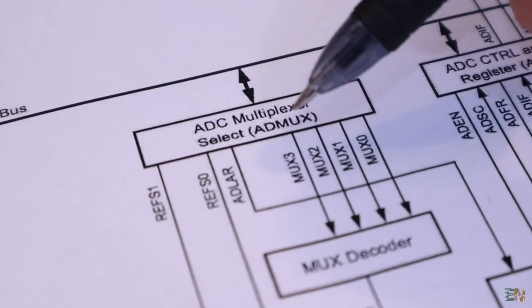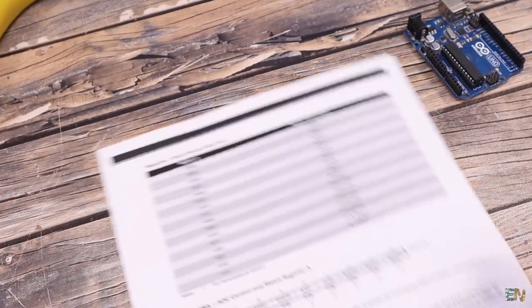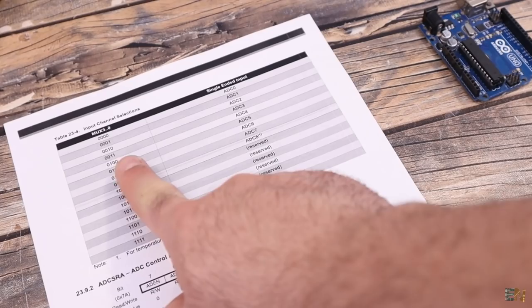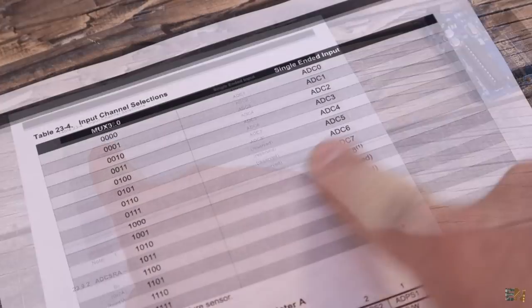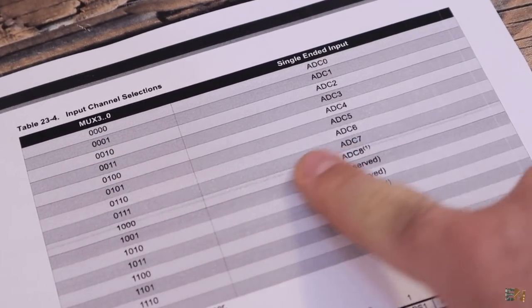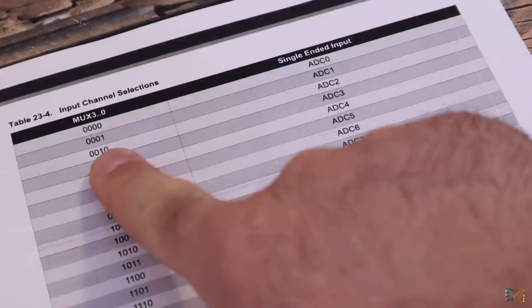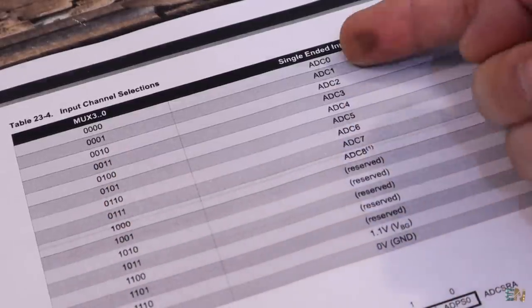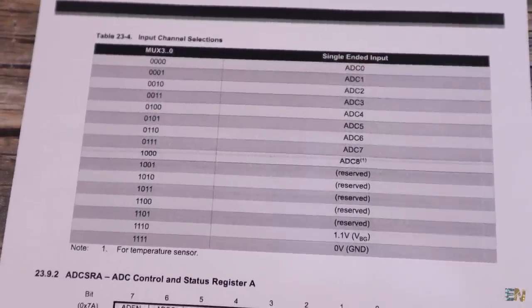These bits are from the ADMAX register. So if these bits are 0000, the ADC input will be the A0 pin. But if the bits are 0001, it will be A1, 0010 it will be for A2 and so on as in this table.